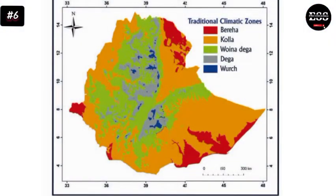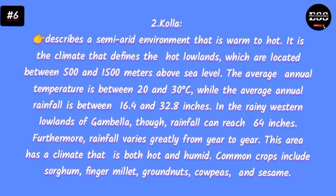The second zone describes a semi-arid environment that is warm to hot — this is the Kolla climate. Warm is considered comfortable while hot is uncomfortable. It is the climate that defines the hot lowlands which are located between 500 and 1500 meters above sea level.